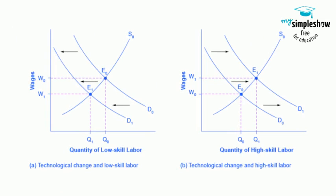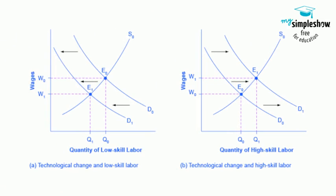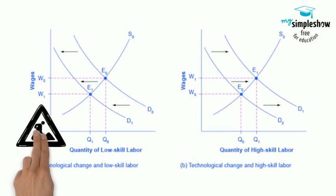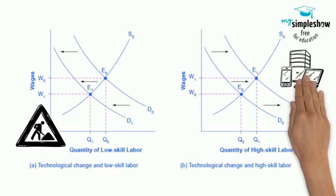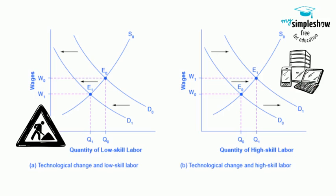Technology and wages. A. The demand for low-skill labor shifts to the left when technology can do the job previously done by these workers. B. New technologies can also increase the demand for high-skill labor in some fields, such as information technology.